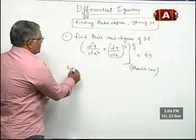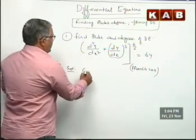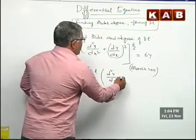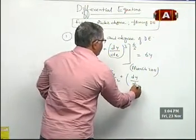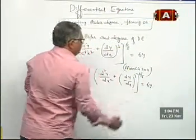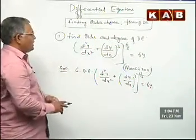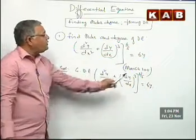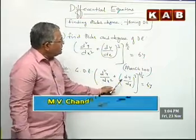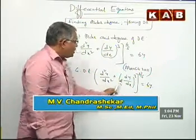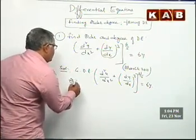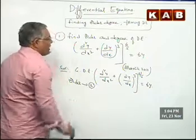Solution. The given differential equation is d²y/dx² + (dy/dx)³ whole power 6/5 = 6y. Order we will get straight away. What are the differentials involved? This is a second order differential, this is a first order differential. Among these two, second order is the highest. So the order is 2.